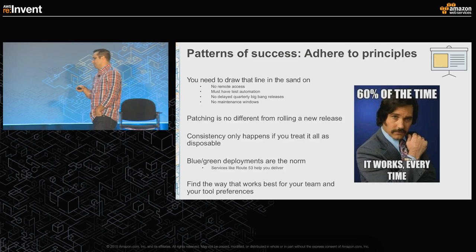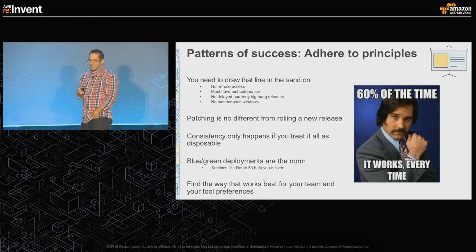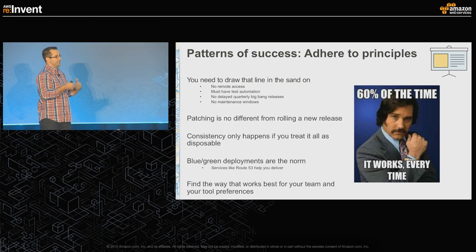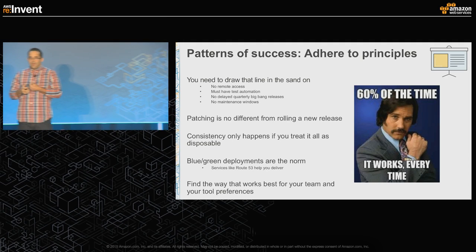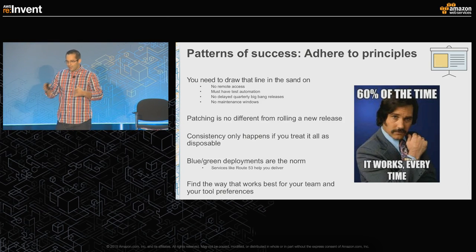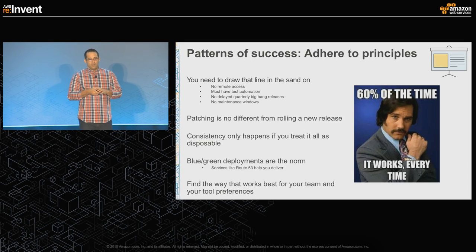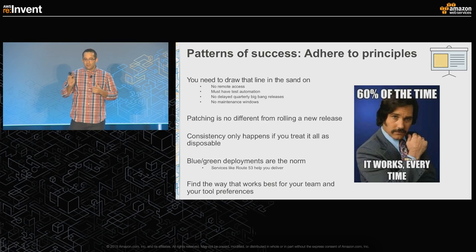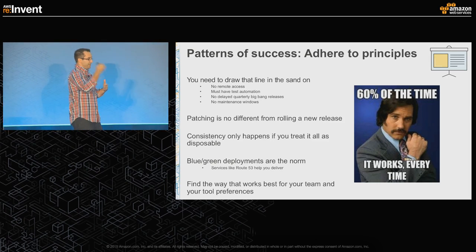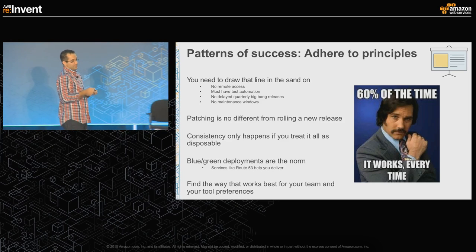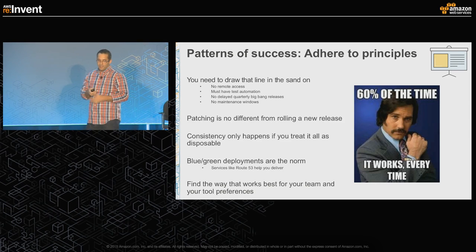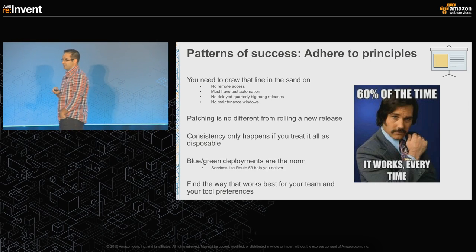Pattern for success — and I always try to have at least one Anchorman reference: 60% of the time it works every time is not good enough. You have to adhere to these principles. Get consistent and repetitive. No remote access whenever possible. Test automation from day one. Consistently only happens when you treat everything as disposable — completely wiping off everything on the instance before deploying a new version, starting from a brand-new baked AMI deployed dynamically. Blue-green deployments are the norm for the customers I talk to who are being successful with large fleets.